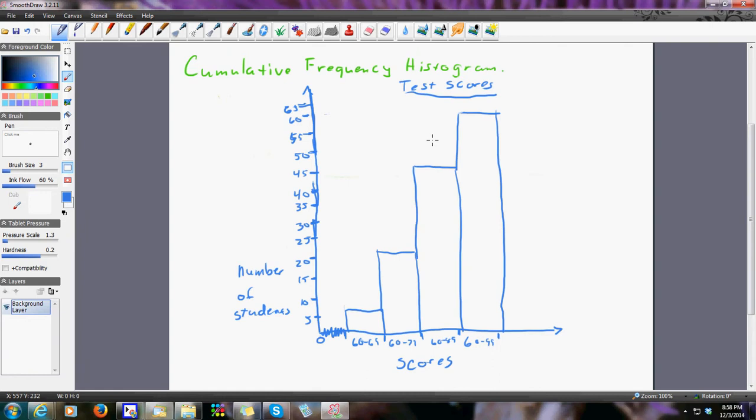Now, the reason why this is useful is because, look, if I wanted to find out, well, I know I have 60 total. And let's say I said, well, I wonder how many, where 40% is. Well, 40% of 60 are 24.